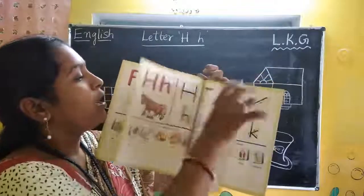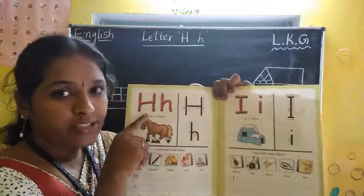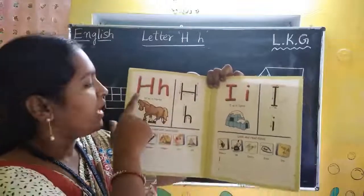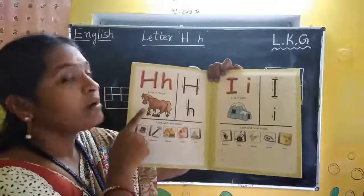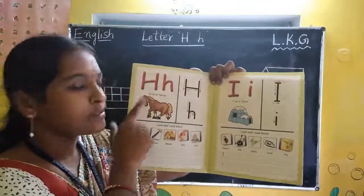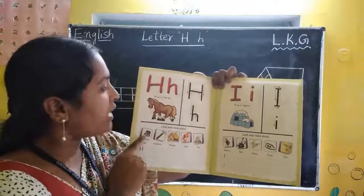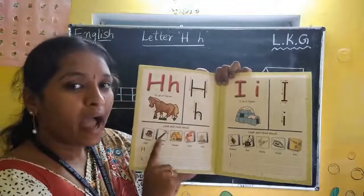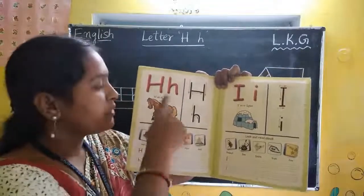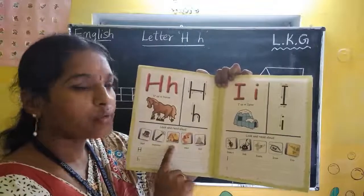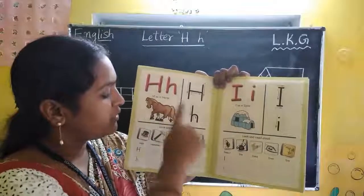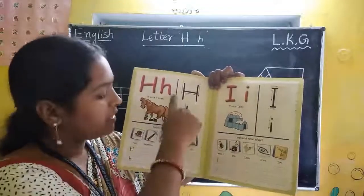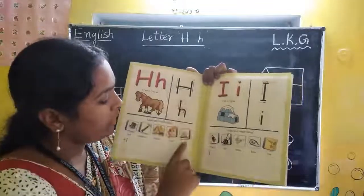Now capital H and small H. H for horse, H for hat, H for hammer, H for house, H for hair, H for hill.